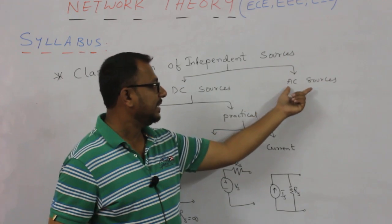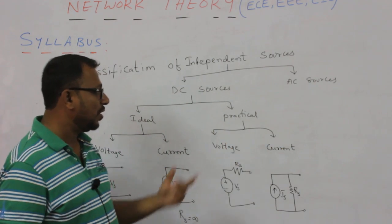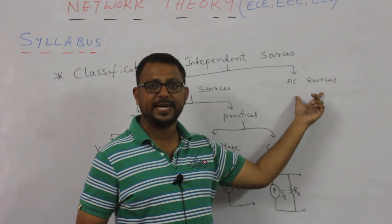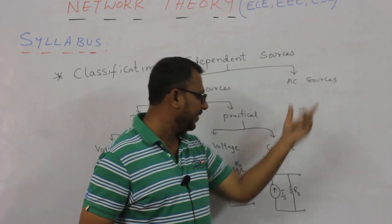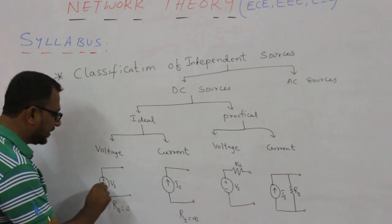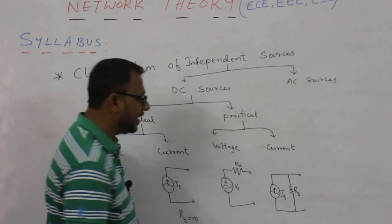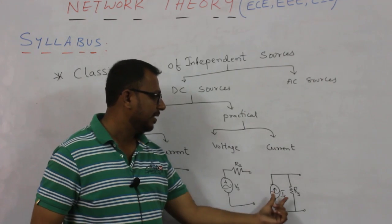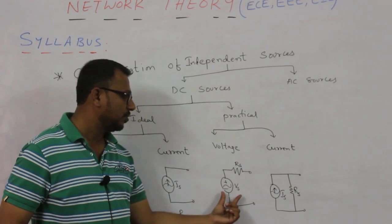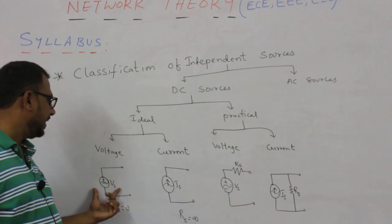The same classification is valid for AC sources as well, with practical voltage and current sources. In AC, we do not have a fixed positive or negative terminal, but for reference purposes we assign them. The ideal AC voltage source is represented with a sinusoidal signal drawn along with it, forming the circuit symbol for the practical AC voltage source and practical AC current source.